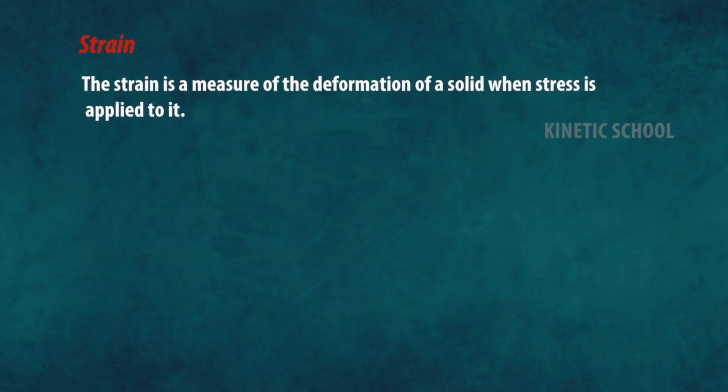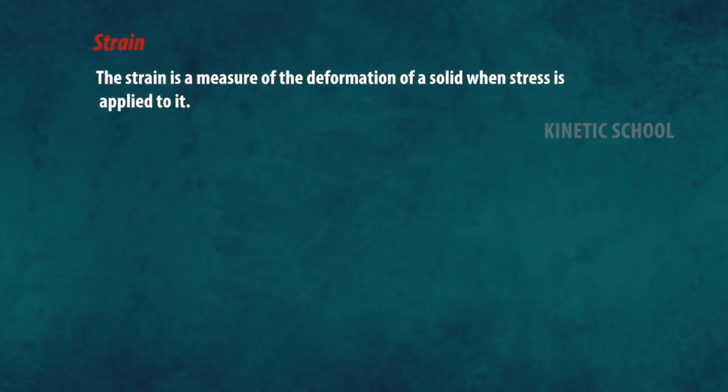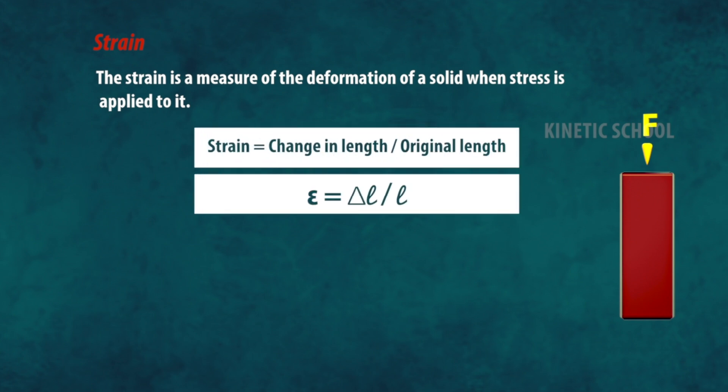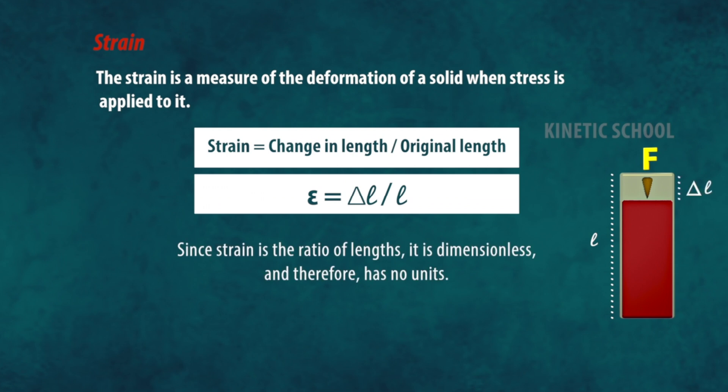What is strain? Strain is a measure of the deformation of a solid when stress is applied to it. Strain equals change in length divided by original length, so epsilon equals delta L divided by L. Since strain is a ratio of length, it is dimensionless and has no units.